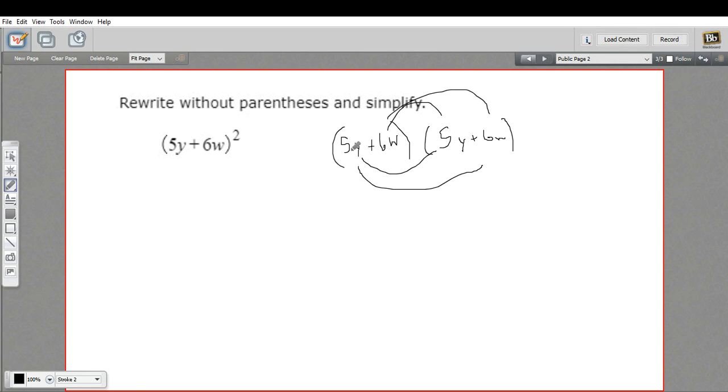So let's go ahead and try that. 5y times 5y, well the 5 times 5 is 25, y times y is y squared. That gives us 25y squared.